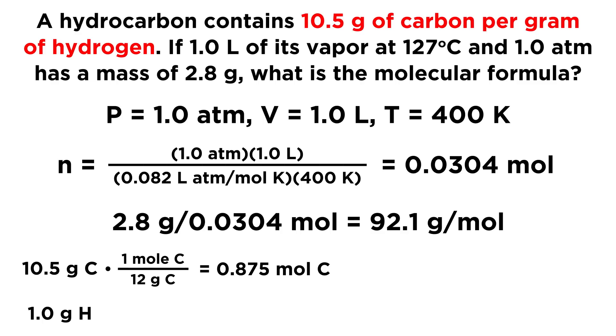And then let's take our 1 gram of hydrogen, because we know that we have 10.5 grams of carbon for every 1 gram of hydrogen. Let's multiply by 1 mole hydrogen over 1 gram of hydrogen, because we know that hydrogen has a mass of 1. So we're going to treat that as 1 mole of hydrogen. Because we have this many moles of carbon for every mole of hydrogen, we know that the ratio of carbon atoms to hydrogen atoms in this sample is 0.875 to 1.